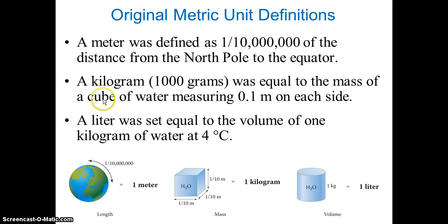1000 grams, was equal to the mass of a cube of water measuring 0.1 meter on each side. And a liter was set equal to the volume of 1 kilogram of water at 4 degrees Celsius. So that was the original metric unit definition.